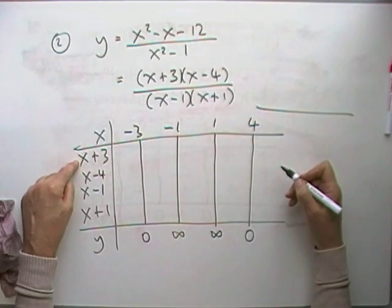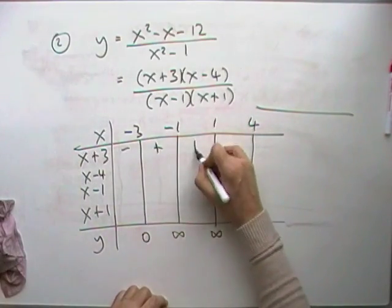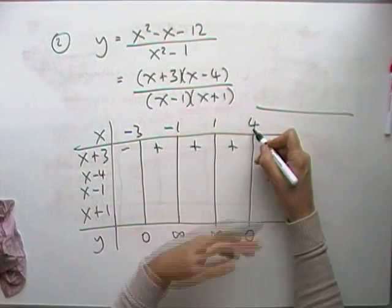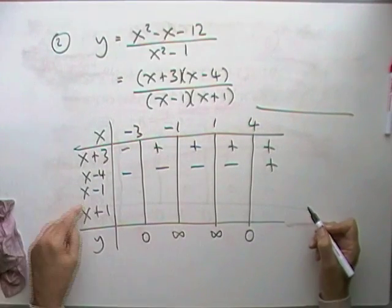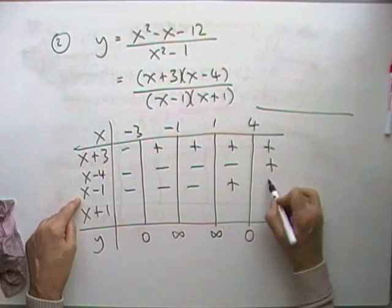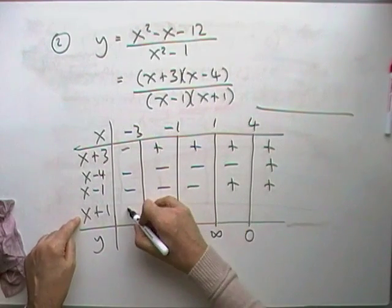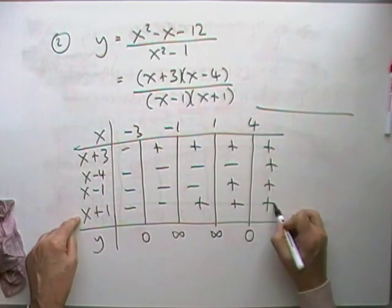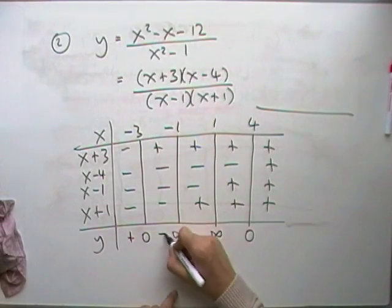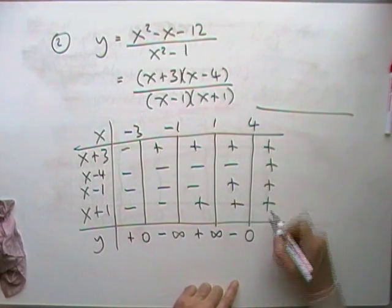You can rattle through the signs. x plus 3. x plus 3 is 0 at negative 3. So it's going to be negative before it and positive after it. x minus 4 will be 0 at 4. So it's going to climb up to 4 being negative and then go positive afterwards. x minus 1 is going to be 0 at 1. So it's going to be negative before it and then positive after it. x plus 1 is going to be 0 at negative 1. So it's going to be negative before it and positive after it. And then it's just a case of rattle through 4 multiplying negatives. Positive. 3 multiplying negatives. Negative. 2 multiplying negatives. Positive. Only the 1. Negative. All positive.